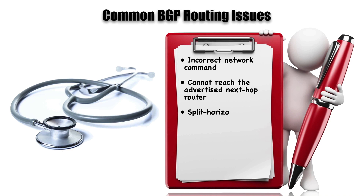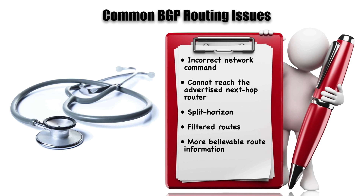Similar to EIGRP, we could have a split horizon issue, where a route learned on an interface is not advertised back out that interface — which can be a problem in point-to-multipoint networks like frame relay. We could also have filtered routes, either intentionally or inadvertently, or a more preferred route like a static route taking precedence over a BGP-learned route. It's also possible BGP is taking a sub-optimal route because of inappropriate path attributes.